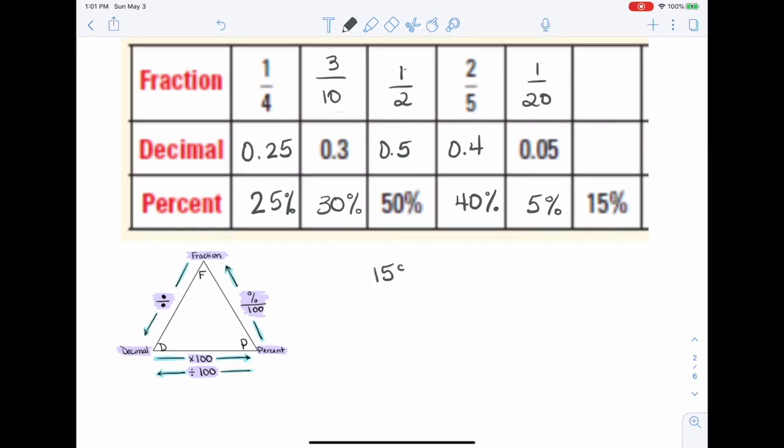Now, 15%, para cambiarlo a decimal, acuérdense, tomamos quince, y vamos a mover el punto uno, dos, y termino con 0.15. A cambiarlo a fracción, voy a regresar al porcentaje, porque yo sé que el porcentaje tomo el número y lo pongo sobre 100. Y aquí, yo puedo dividir entre cinco. Y eso me va a dar 3/20.